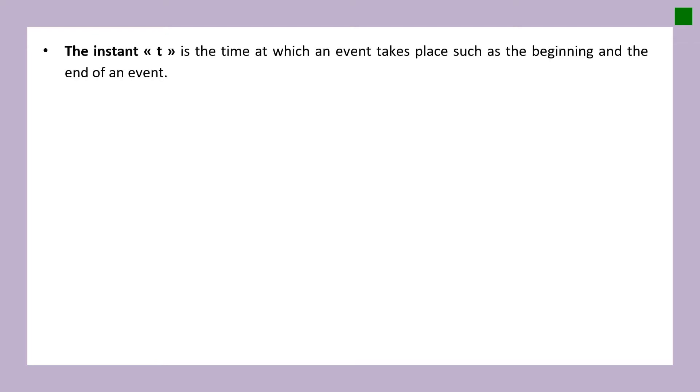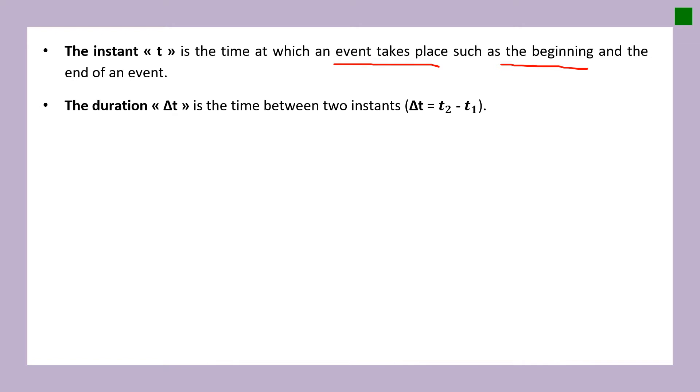Let's have a quick review about last week's lecture because it's important — it's part of the chapter and you're going to use it for this week's lecture. The instant is the time at which an event takes place, such as the beginning and the end of an event. The duration, delta t, is the time between two instants, so delta t equals t2 minus t1.